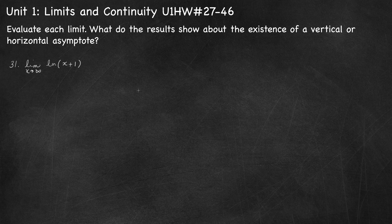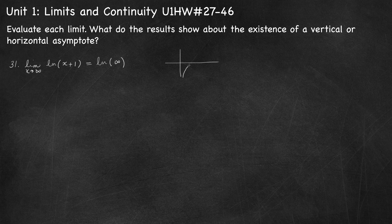Number 31, find the limit as x approaches infinity of the natural log of x plus 1. Using substitution gives the natural log of infinity plus 1, and infinity plus 1 is still infinity. Looking at the natural log graph, there's a vertical asymptote at 0, and as x approaches infinity the y value continuously grows — very slowly, but it does grow. So this limit is infinite, the limit does not exist, and there is no horizontal asymptote.